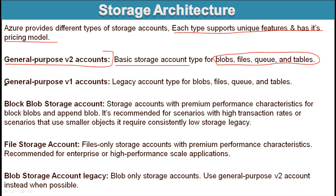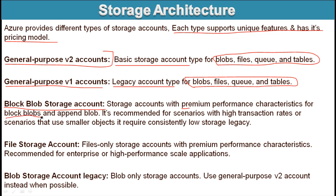Next is the General Purpose V1 account, which also stores blob, file, queue, and table data, but this is a legacy account type. Next is the Block Blob Storage account, which provides premium performance characteristics for block blobs and append blobs. It is suited for high transaction rates or scenarios that use smaller objects and require consistently low storage latency.